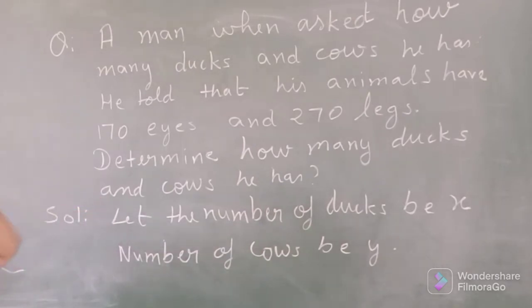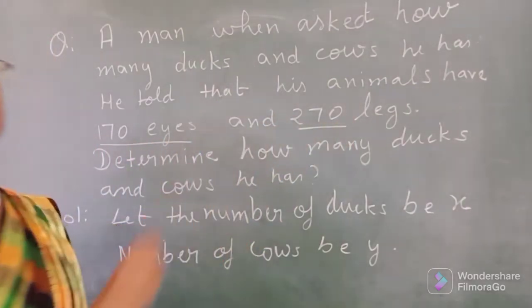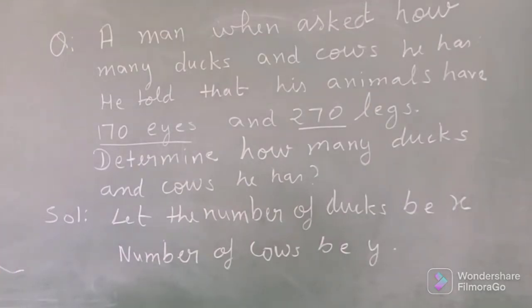Means, एक आदमी से पूछा गया कि उसके पास कितनी ducks और कितनी cows हैं. उसने अपना answer इस तरह से दिया कि उसके पास जितने भी animals हैं, उनकी 170 eyes हैं और 270 legs हैं. तो अब आप इस basis पर बताएं कि कितने उसके पास cows हैं और कितने ducks हैं.